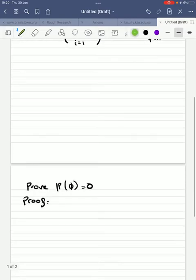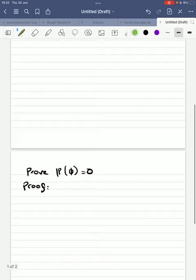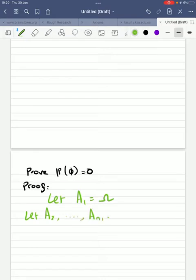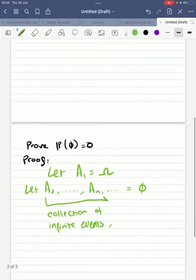Let's dive in then. So, I'm going to let A1 be the whole sample space. And then I'm going to let A2, and so on and so forth, AN, and so on and so forth, be the empty set. What I have here is I have a collection of infinite events where each event is just the empty set.